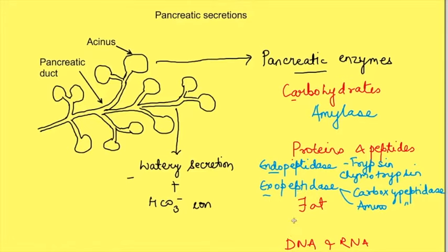For fat digestion there is pancreatic lipase and for DNA RNA digestion there are ribonucleases. Now pancreatic amylase and lipase are released in active form, however proteases are released in inactive form as trypsinogen and chymotrypsinogen.